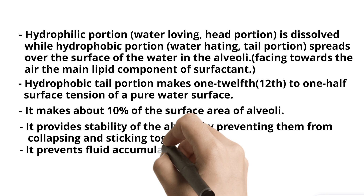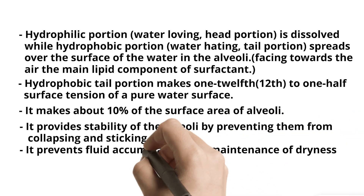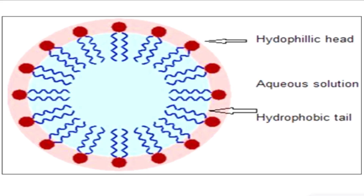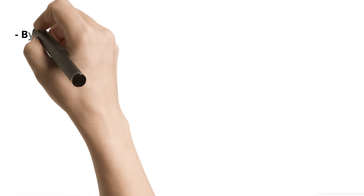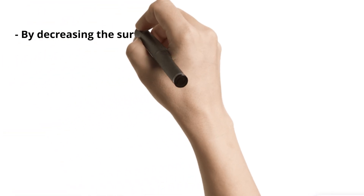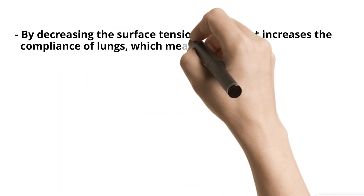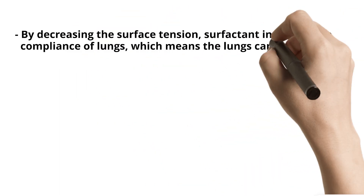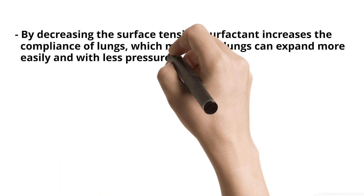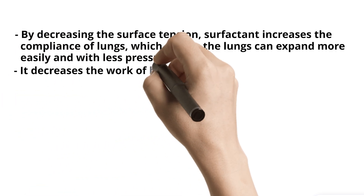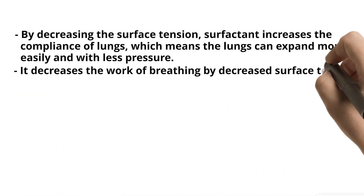Surfactant provides stability of the alveoli by preventing them from collapsing and sticking together. It prevents fluid accumulation and maintains dryness of airways. By decreasing the surface tension, surfactant increases the compliance of lungs, which means the lungs can expand more easily and with less pressure. It decreases the work of breathing by decreasing surface tension.